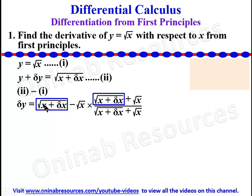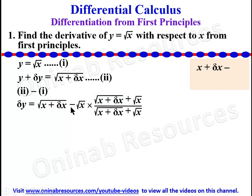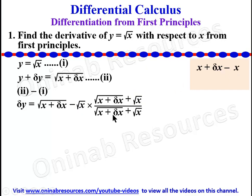So we multiply out the numerator. Root x plus delta x multiplied by root x plus delta x gives us x plus delta x. So we have x plus delta x minus, then root x times root x will give us x. Then over this denominator.